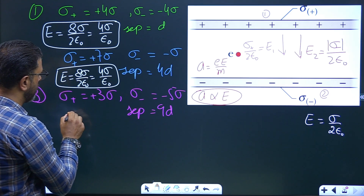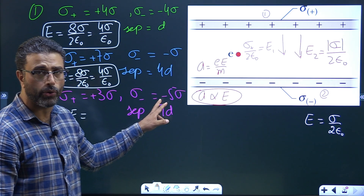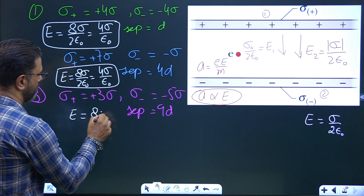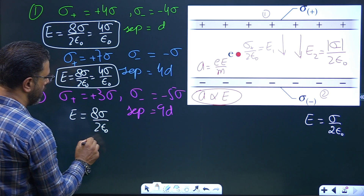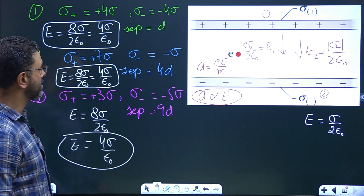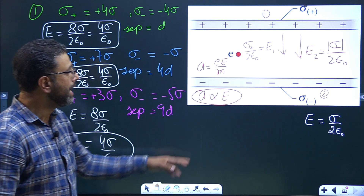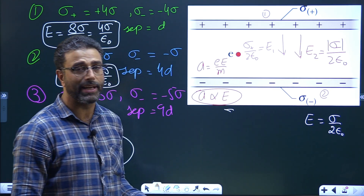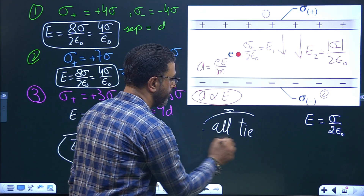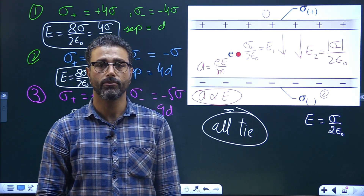For the third case, the field is 3σ + 5σ — remember we just take the magnitude, not the minus sign — so 5 + 3 = 8σ, divided by 2ε₀, which is again 4σ/ε₀. The field in all three cases is the same: 4σ/ε₀. Therefore, the acceleration in all three cases is the same — all tie!